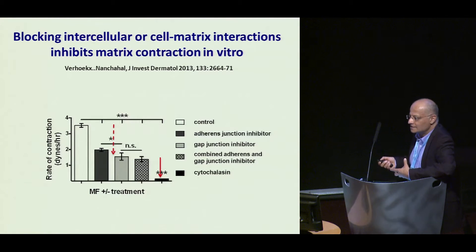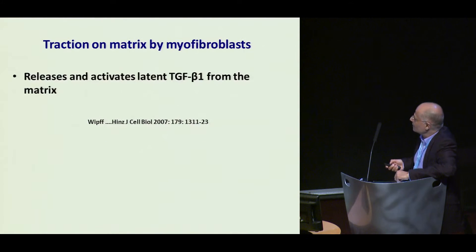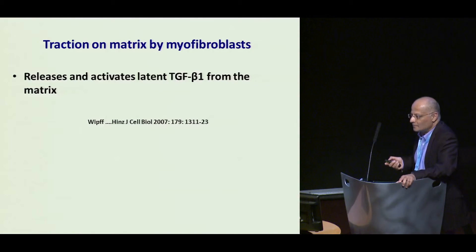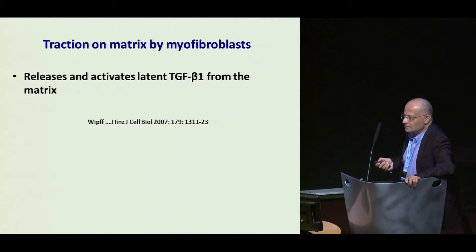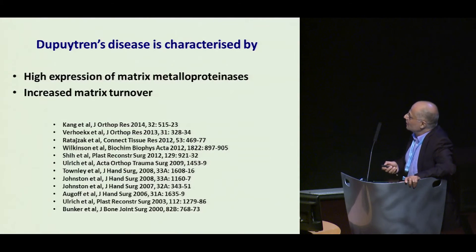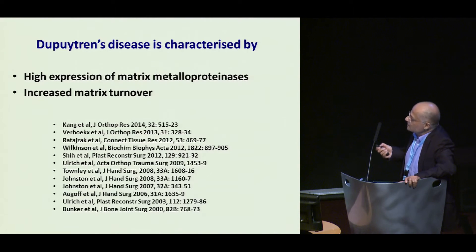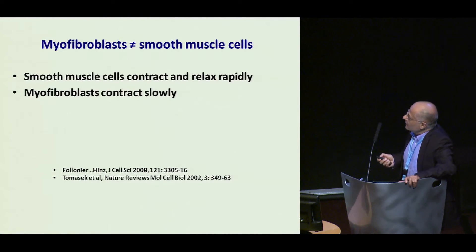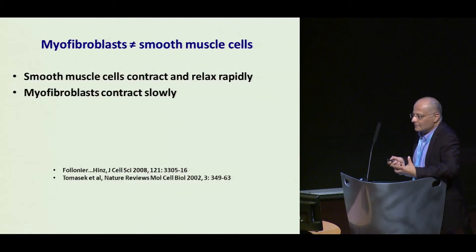The cells are pulling on each other and they're pulling on the matrix. TGF-beta is produced by the myofibroblasts and sits in the extracellular matrix; when the cells pull on the extracellular matrix they activate latent TGF-beta, which then drives the myofibroblast phenotype — so you get this vicious cycle. There's any number of publications showing this high matrix turnover: increased matrix production but also increased matrix degradation by matrix metalloproteinases.